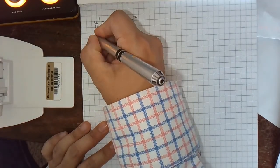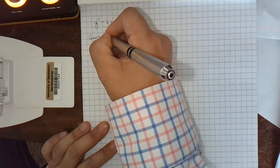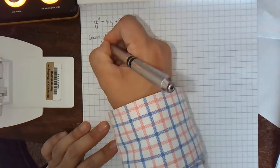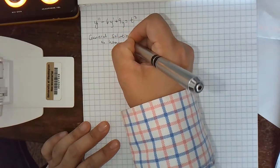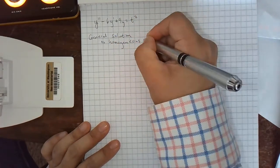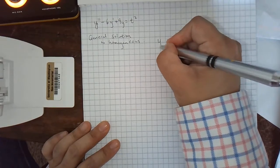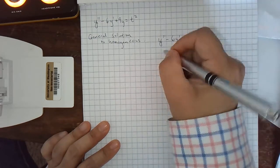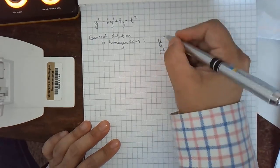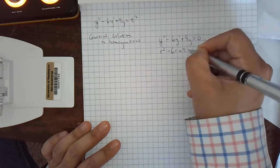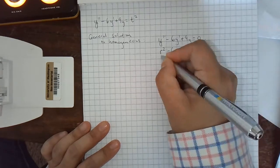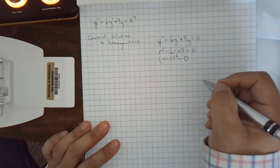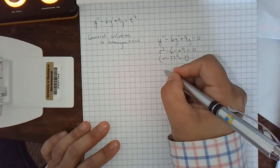And remember, in general, we're going to look for the general solution to the homogeneous, the corresponding homogeneous differential equation. And that differential equation is y double prime minus 6y prime plus 9y equals 0. And we've solved this before, but I'll just do it again. We write down the characteristic equation. We factor it. We realize that there's a double root.